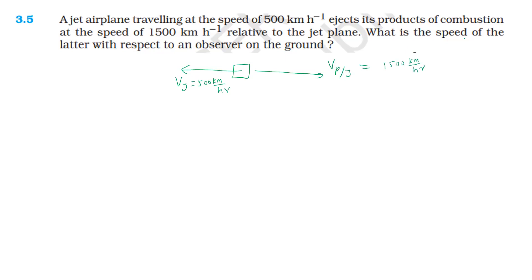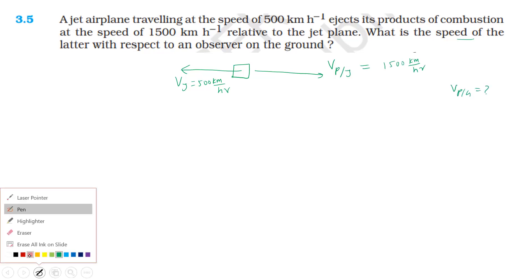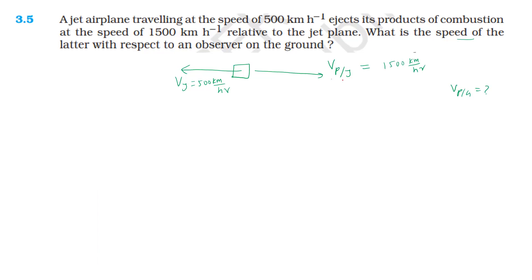The velocity of the products with respect to the ground is found by combining the velocity of the product with respect to the jet plane and the velocity of the jet plane, which acts in the opposite direction.